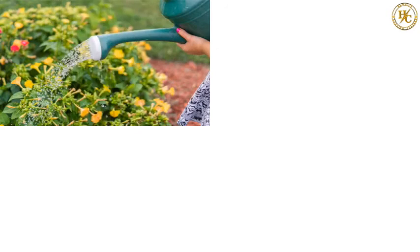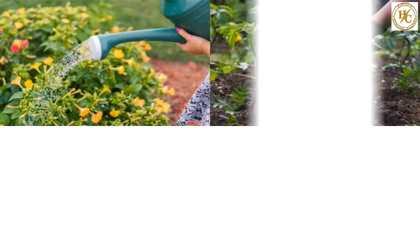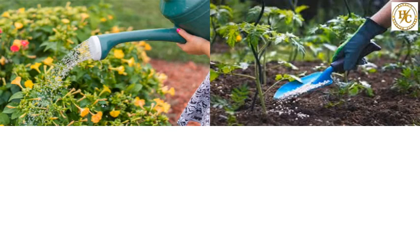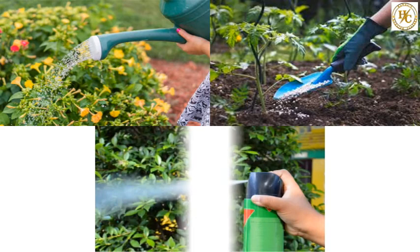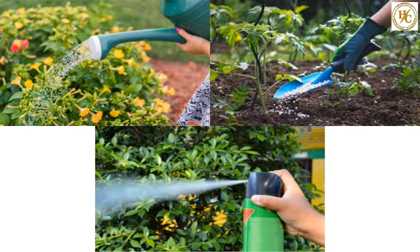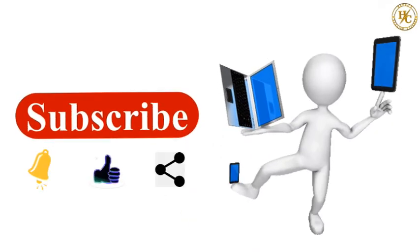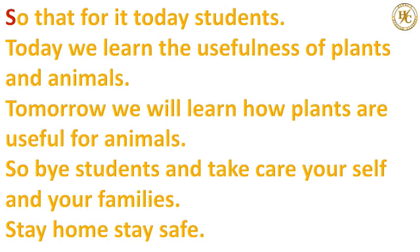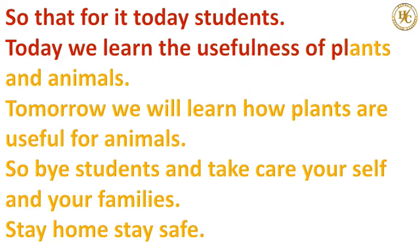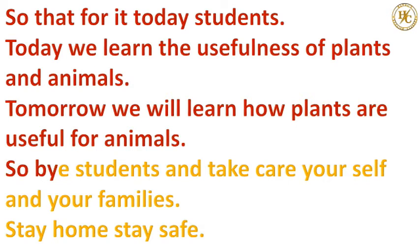And in return of all these things, we give water to these plants. We give them manure when necessary. We also spray pesticides if they are attacked by insects. So, that's it for today students. Today, we learned the usefulness of plants and animals. Tomorrow, we will learn how plants are useful for animals. Bye students and take care of yourself and your family. Stay home, stay safe.